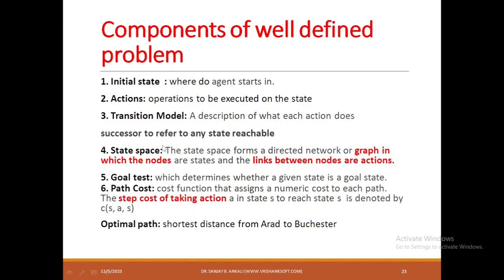Once we understand the phases of problem solving, the next question is: what components must be considered to make it a well-defined problem? The first is the initial state — where the agent starts from. The second is action — what operations you will execute on the state. The third is the transition model — given the current state and an action, what is the next state reached. The fourth is the state space tree: during solving the problem, you consider the environment as a graph where nodes are states and links are actions.